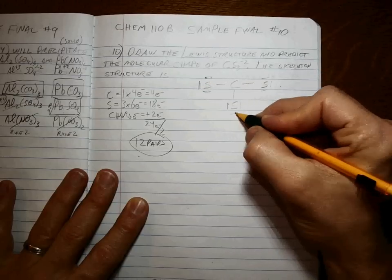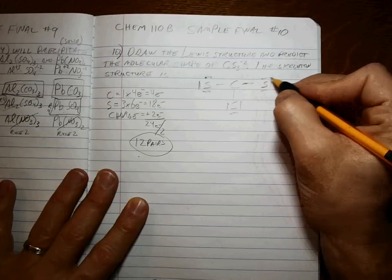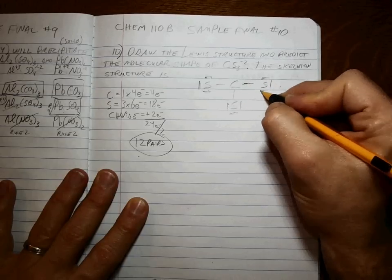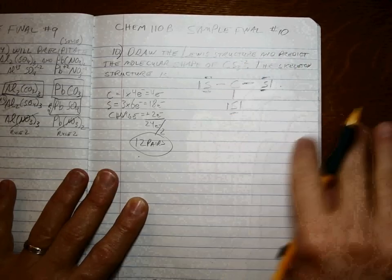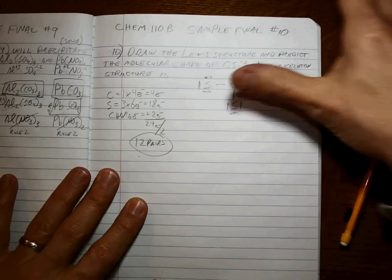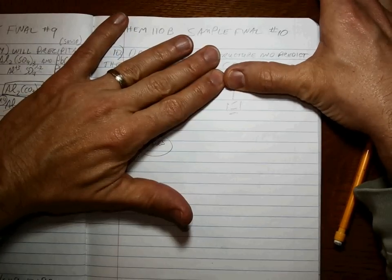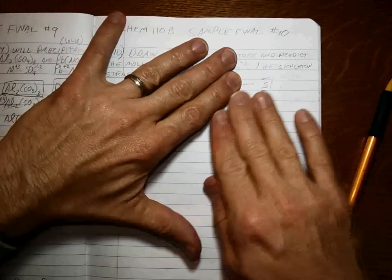If we've used up 12, we can't add any more. So, where are we at here? Well, the sulfur is certainly happy. There, there, and there, right?